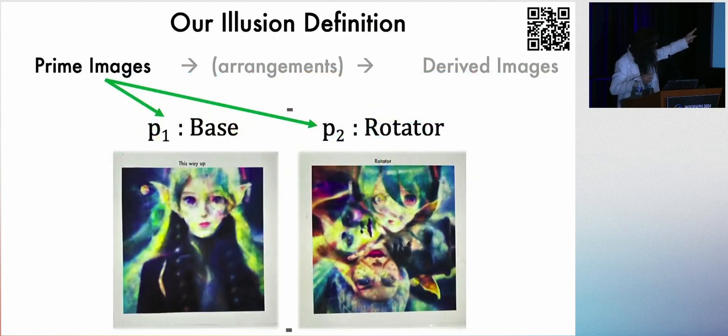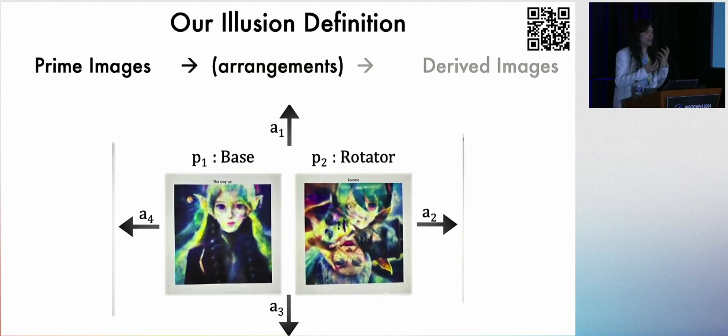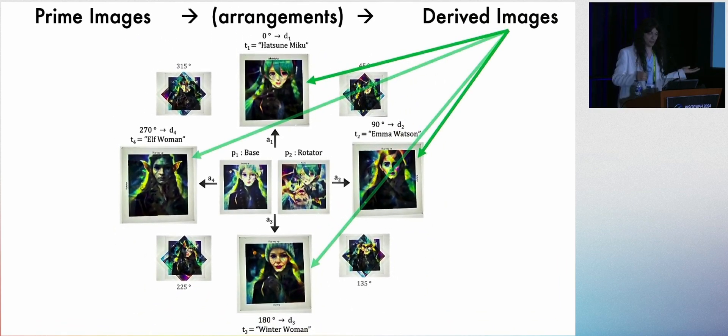And we call these two images the prime images, because they are used to derive the other images by rearranging them. So P1 and P2 are the primes, and different arrangements, different rotations on the top, A1 through 4, get turned into four different derived images.